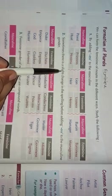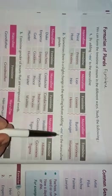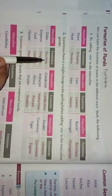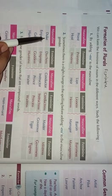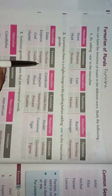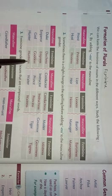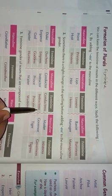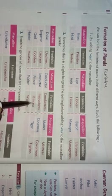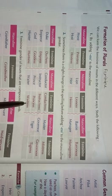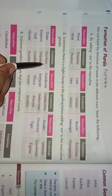Sometimes there is a slight change in the spelling before adding '-ess'. For example, duke becomes duchess — note the spelling change. Emperor becomes empress. Goddess is formed similarly. In some cases the final letters change slightly before '-ess' is added, but the rule of forming feminine with '-ess' still applies.